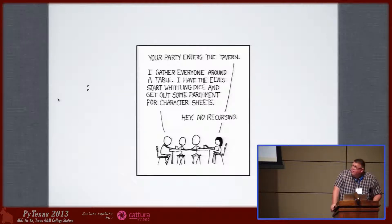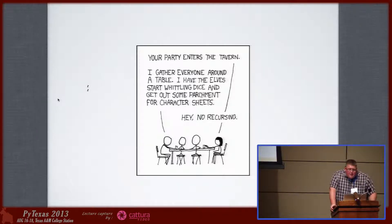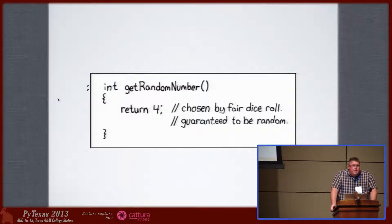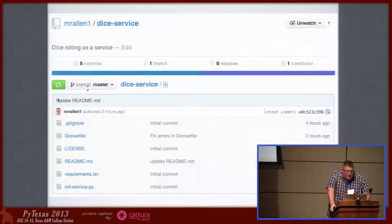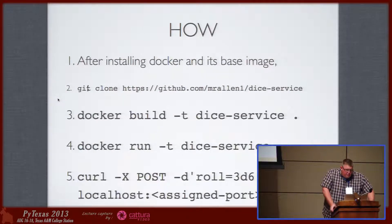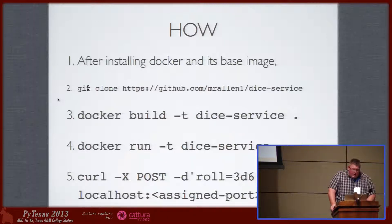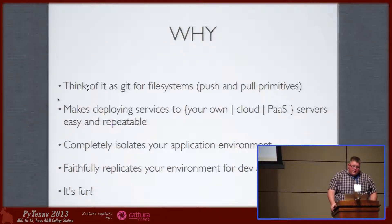I'm a gamer and I really like Dungeons and Dragons — don't judge. I wanted to write a service where I supply a dice roll and get back my result, so I wrote that in Python. It turns out there's a really nice dice rolling library in Python. I called it Dice Service, it's on GitHub. All you have to do is check out my GitHub repo, get Docker installed, build your container, then curl a POST with your die roll specification to the assigned port and you get back a result.